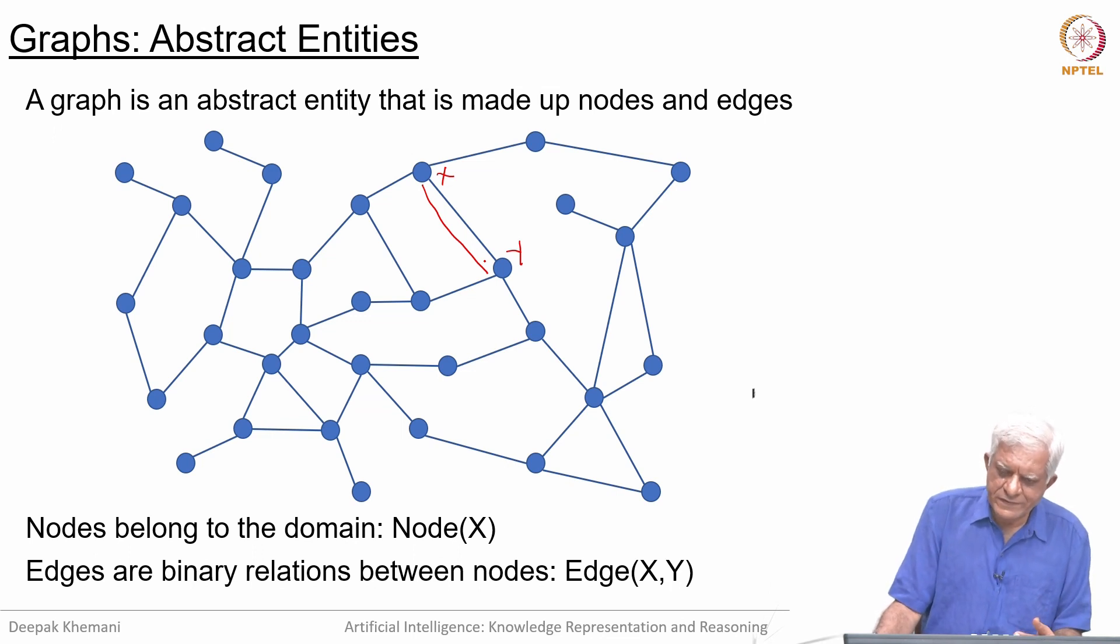Here we are modeling edge as a binary relation, just like parent, child, or uncle, nephew. There is an individual, another individual, and an edge between them.